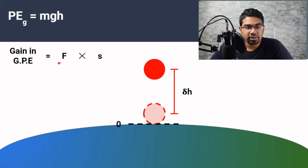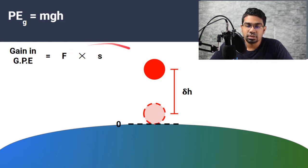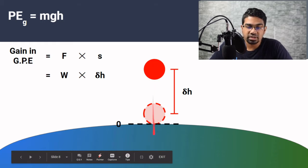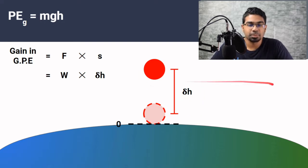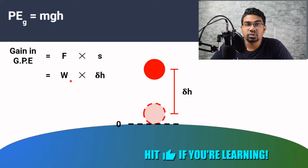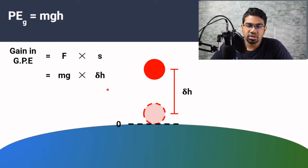The amount of work done on an object can be calculated by multiplying the force used and the displacement of the object in the direction of the force. In this case, we are doing work against gravity — gravity pulls it downwards and we lift it up. Since the direction of gravity is vertical, towards the center of the earth, we take the vertical height h as the displacement. Substituting weight as mg, we get mg multiplied by delta h, simplified as mgh.